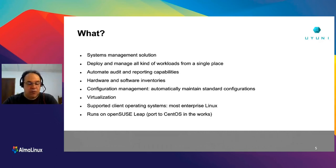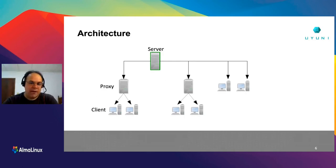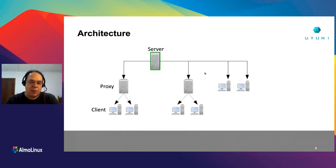Uyuni supports a lot of Linux operating systems — essentially any enterprise Linux is supported, and even some non-enterprise Linux too. The architecture is a typical client-server architecture. We have the Uyuni server and optional Uyuni proxies for large infrastructures of thousands of clients. You can attach systems directly to the server, but when you go over three or four thousand clients, you'll want to use proxies. That way you can easily reach 15,000 to 20,000 clients per Uyuni server, or even more — we have cases of 30,000 clients per system.